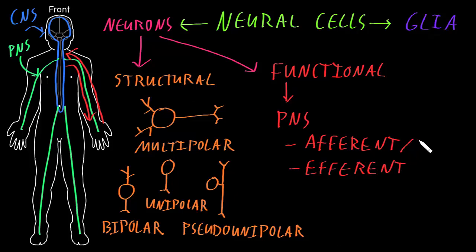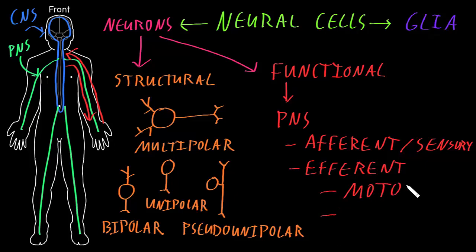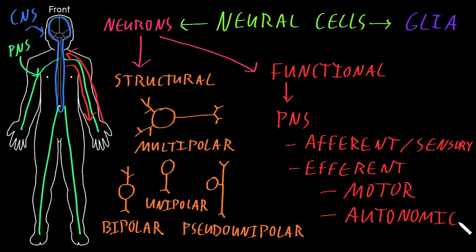We can also call afferent neurons sensory neurons, because they usually carry information that is sensed about different kinds of stimuli, either inside or outside the body. Efferent neurons can be further divided into two big groups. The first are motor neurons, which are efferent neurons that control skeletal muscle — the main type of muscle tissue attached to our skeleton. The other big group of efferent neurons are called autonomic neurons, which control smooth muscle and cardiac muscle, and also control some gland cells.